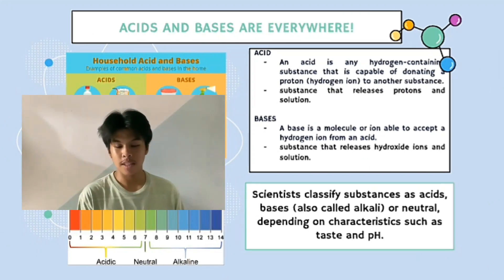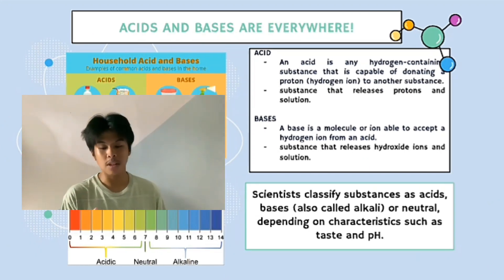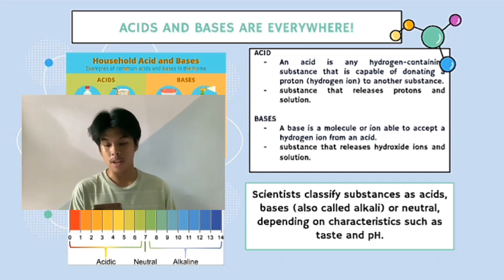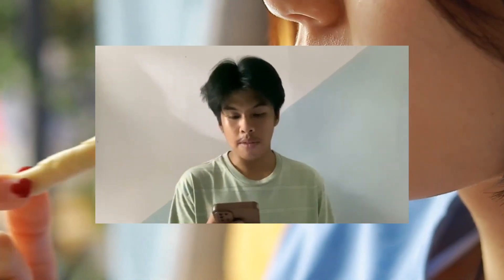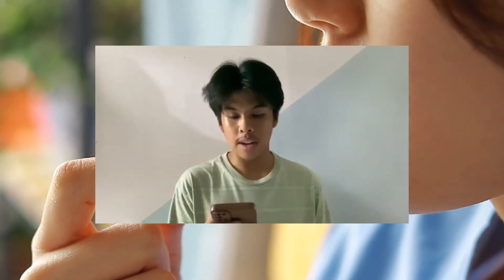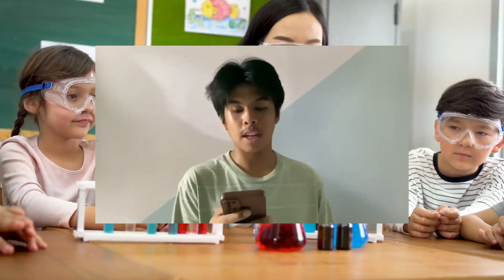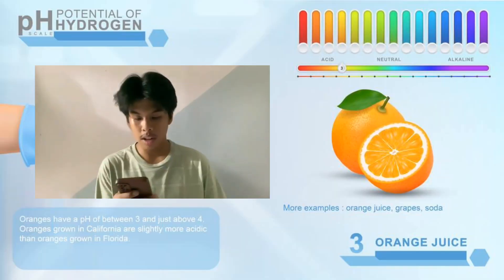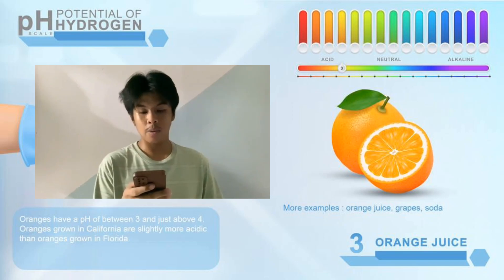Acids are substances that can donate protons, while bases are substances that can accept protons. Acids tend to have a sour taste and can react with metals, while bases often have a bitter taste and feel slippery.